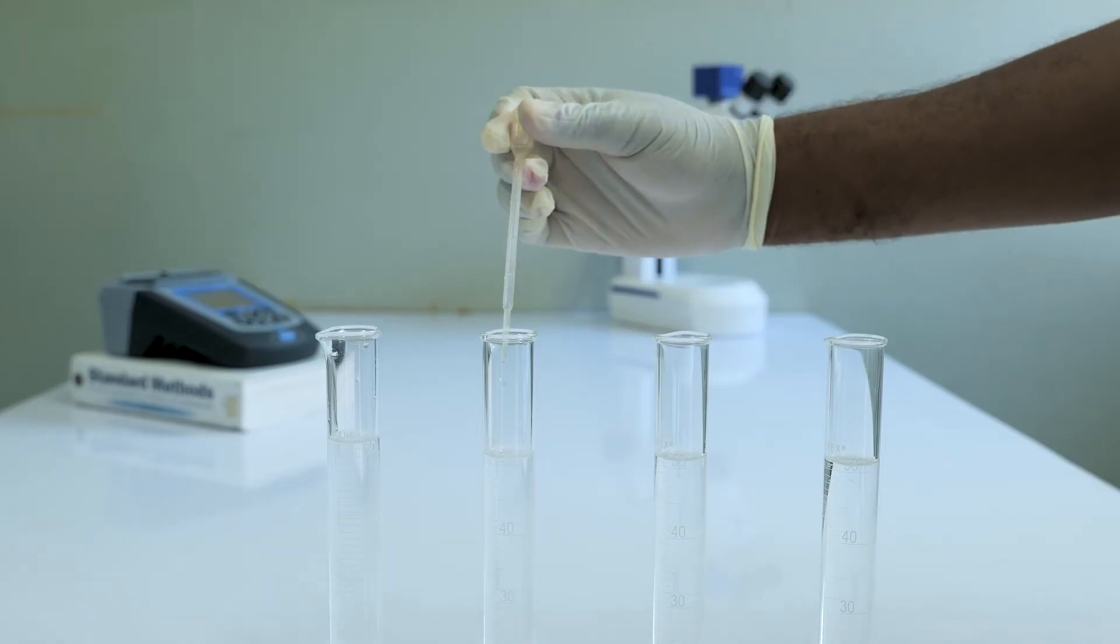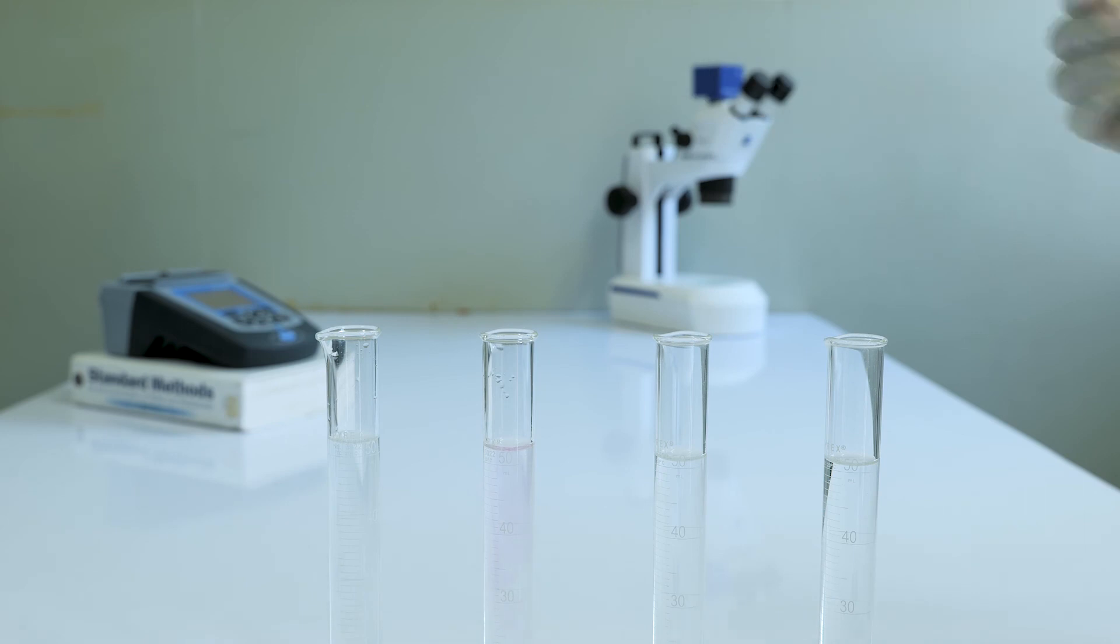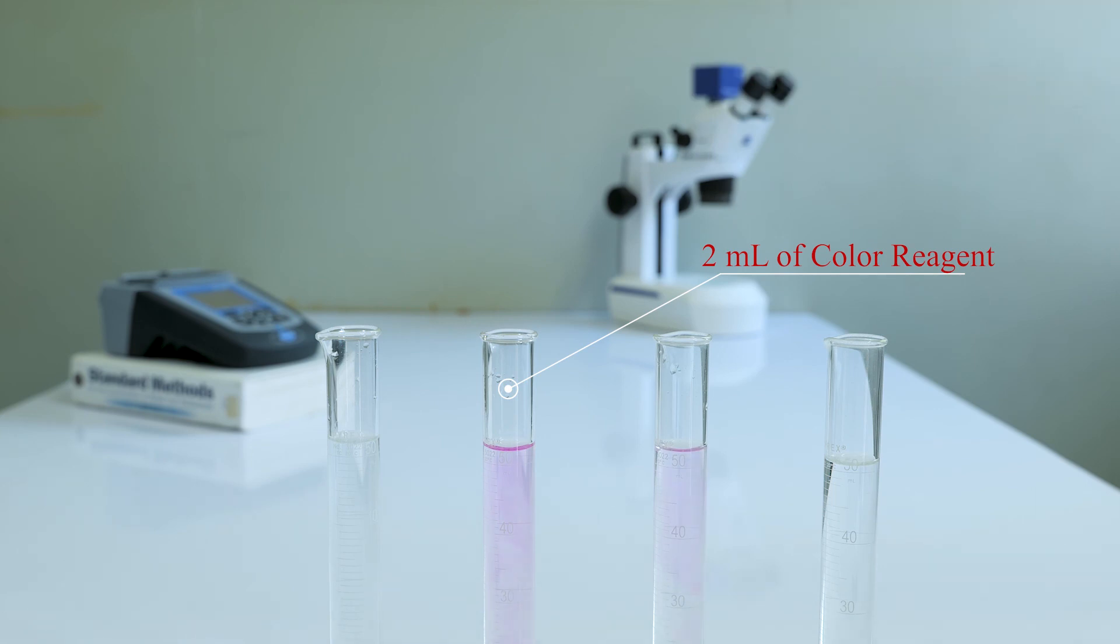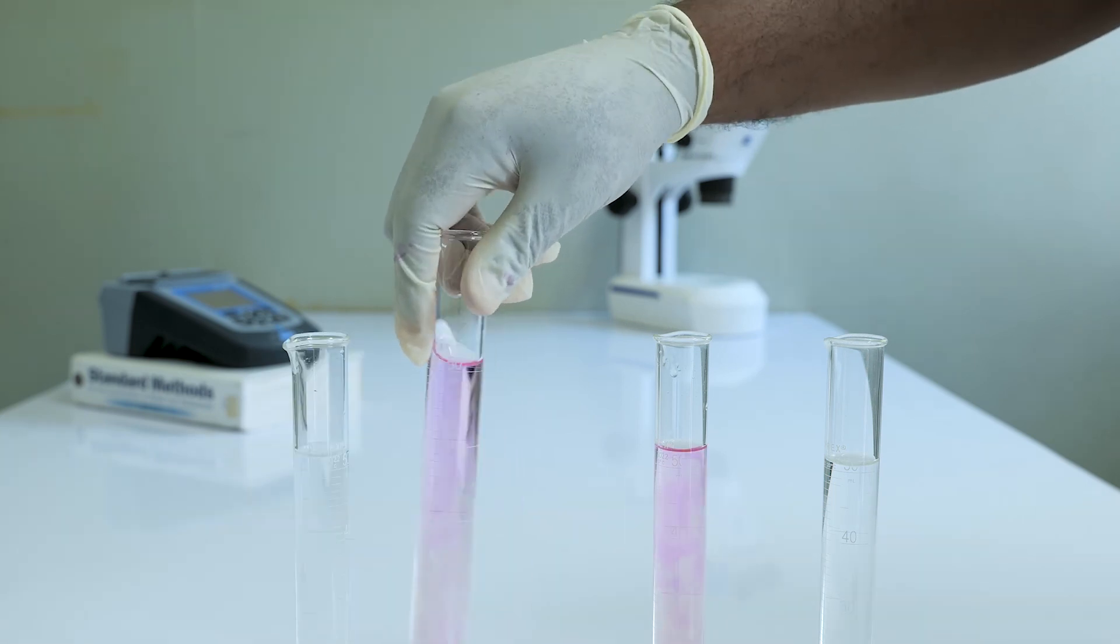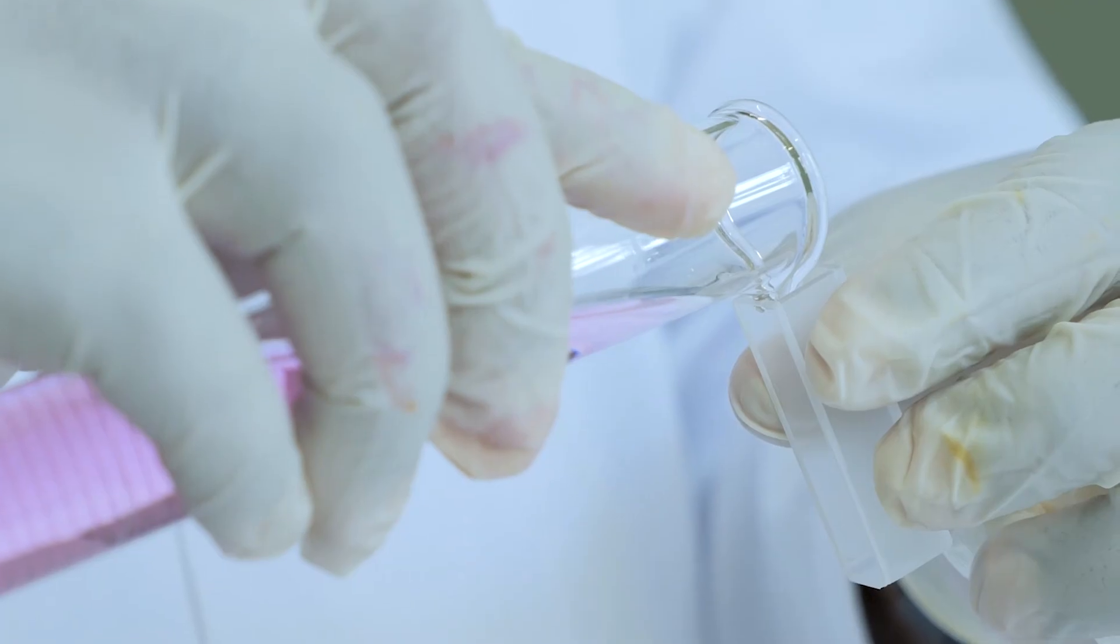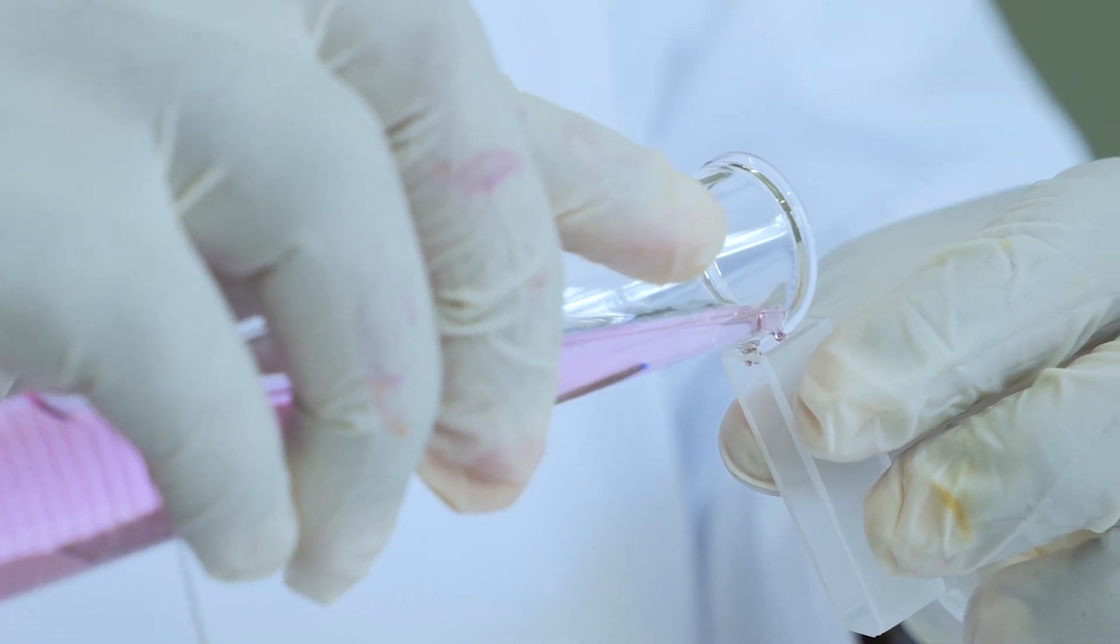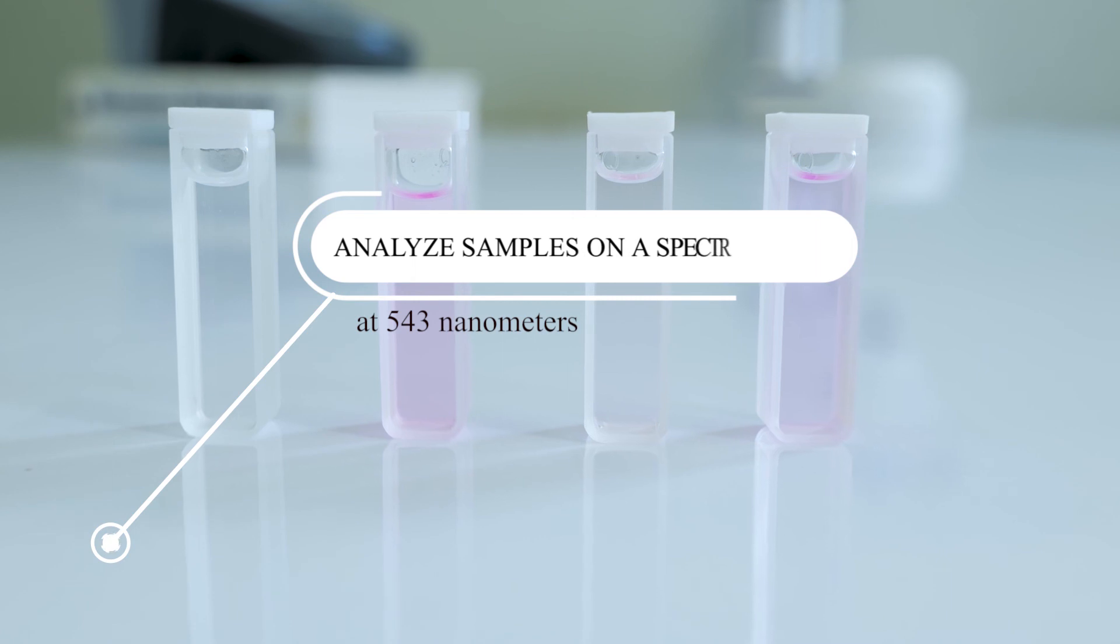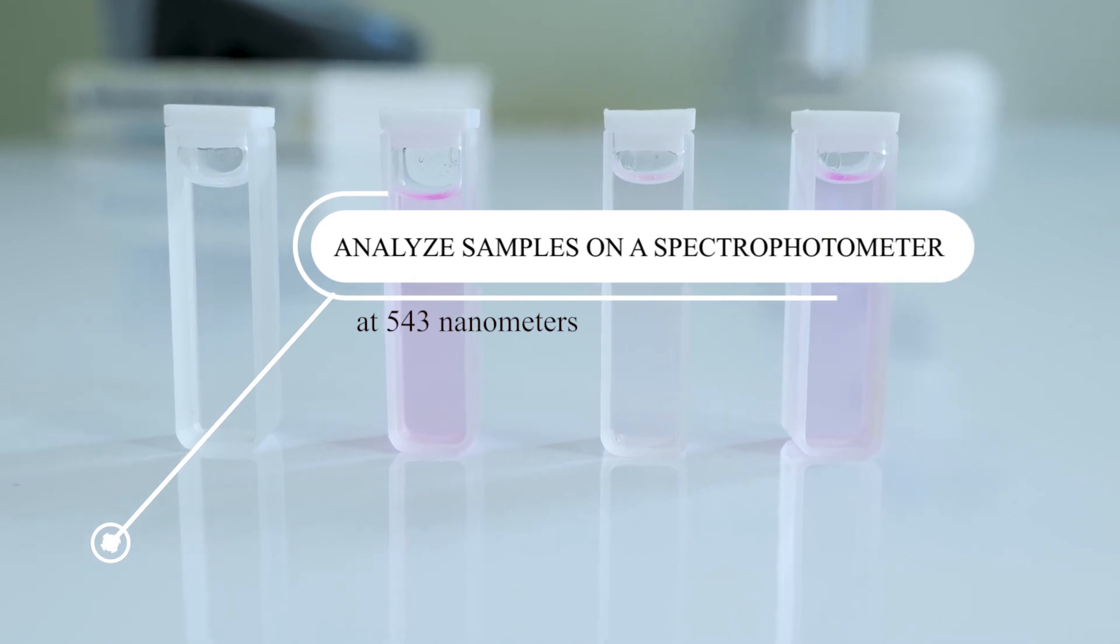As soon as possible and not more than 15 minutes after reduction, add 2 milliliters of color reagent to 50 milliliters of sample and mix. Between 10 minutes and 2 hours afterward, measure absorbance at 543 nanometers against a distilled water reagent blank.